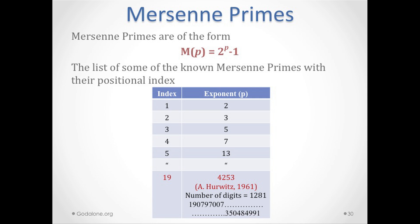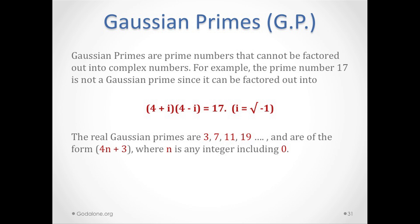Gaussian primes are prime numbers that cannot be factored even in the complex plane. For example, 4 plus i times 4 minus i equals 17, where i is the square root of minus 1. Complex and imaginary numbers are essential to quantum mechanics, relativity, and modern technology. The real Gaussian primes are 3, 7, 11, 19 — numbers of the form 4n plus 3, where n is any integer including 0.